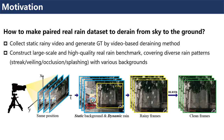To solve this problem, we propose our strategy on how to make paired real rain datasets to derain from sky to the ground. Due to the difficulty of capturing raining and paired clean images simultaneously, we collect static raining video and generate ground truth by a video-based deraining method.